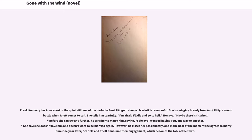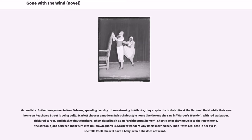One year later, Scarlett and Rhett announce their engagement, which becomes the talk of the town. Mr. and Mrs. Butler honeymoon in New Orleans, spending lavishly. Upon returning to Atlanta, they stay in the bridal suite at the National Hotel while their new home on Peachtree Street is being built. Scarlett chooses a modern Swiss chalet-style home like the one she saw in Harper's Weekly, with red wallpaper, thick red carpet, and black walnut furniture. Rhett describes it as an architectural horror. Shortly after they move into their new home, the sardonic jabs between them turn into full-blown quarrels.